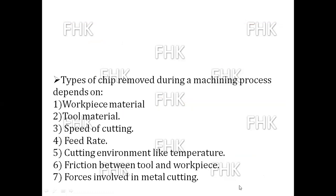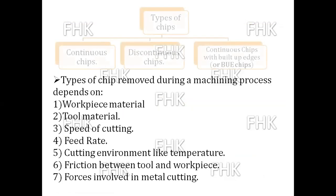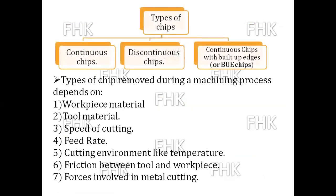Let us see what are the different types of chips formed during the machining, cutting, or shearing operation. First is continuous chips; second is discontinuous chips; and third is continuous chips with built-up edges, also called BUE chips.